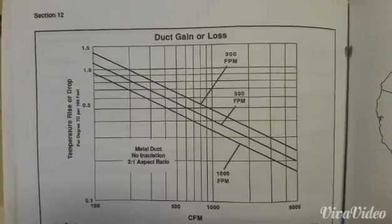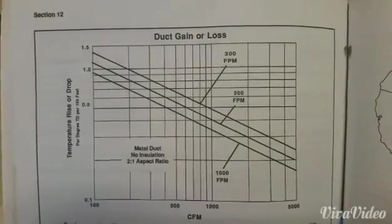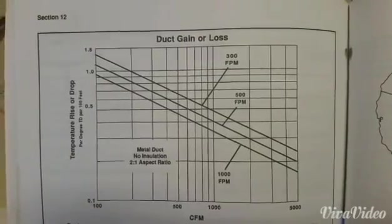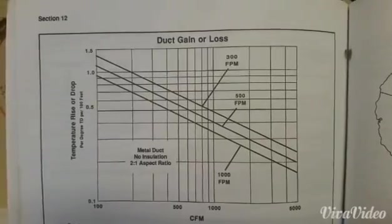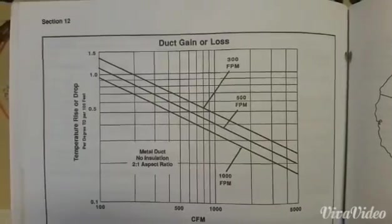Now this is uninsulated ductwork. So 0.4 out of 20 degree difference would mean our ductwork temperature would rise 8 degrees per 100 feet.